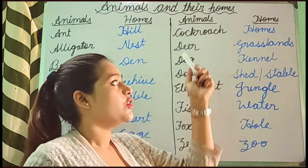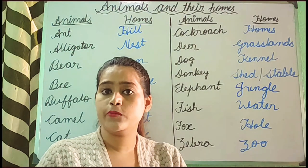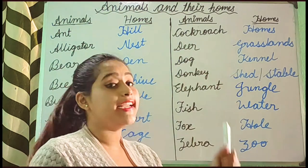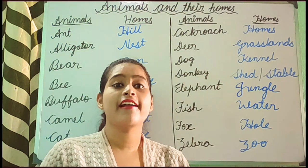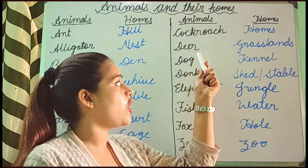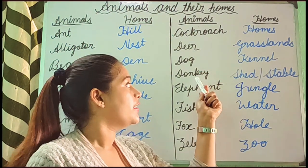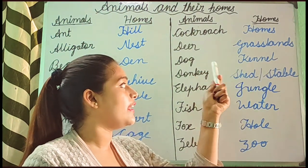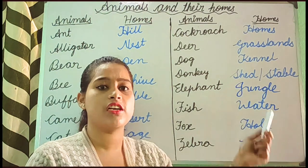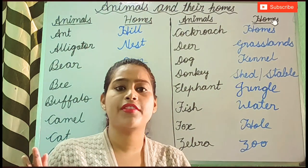Next one, Cockroach. Cockroach lives in homes. Deer. Deer lives in grasslands. Dog. Dog lives in a camel. Donkey. Donkey lives in a nest, or you can say stubble — you can say any of them.